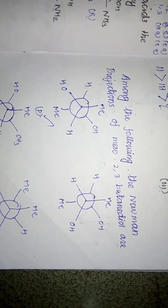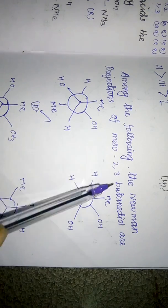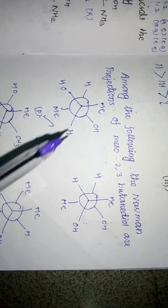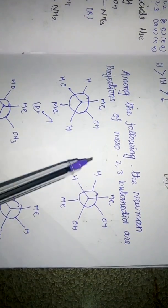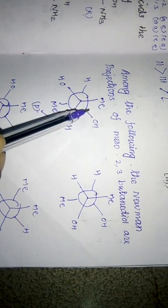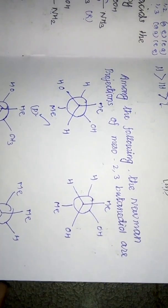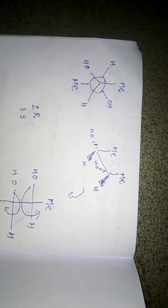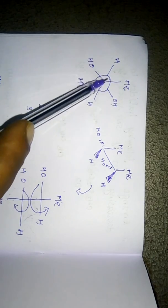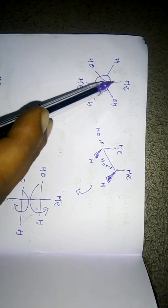The next important question identifies Newman projections of meso-2,3-butanediol. We are given Newman projections and must identify the meso form. To do this, it is helpful to convert the Newman projection into a Fischer projection. In option 1, the front carbon is C2 and the back carbon is C3; the methyl groups are C1 and C4 respectively.